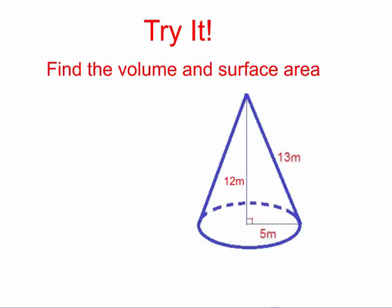So now that you've seen how to do this, your try-it problems for tonight, find the volume and surface area of this shape, where 5, to help you out, 5 is the radius, 12 is the height, and 13 is the slant height. So now you need to find the volume and surface area of this cone.